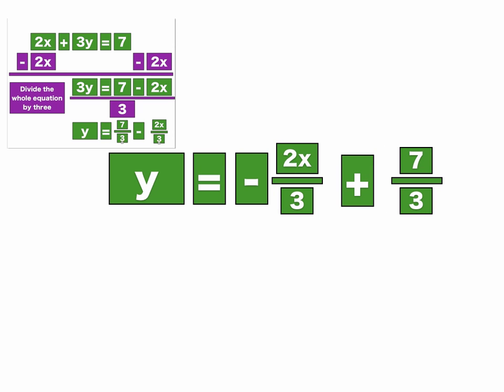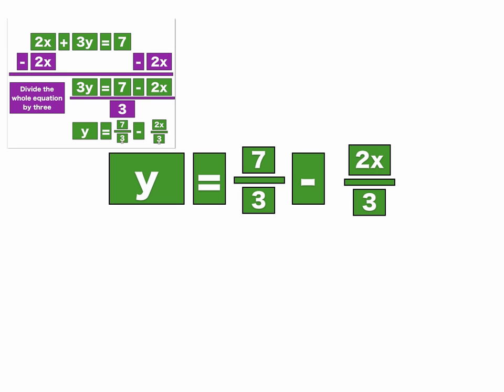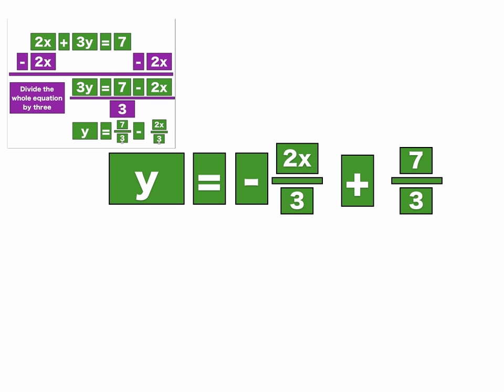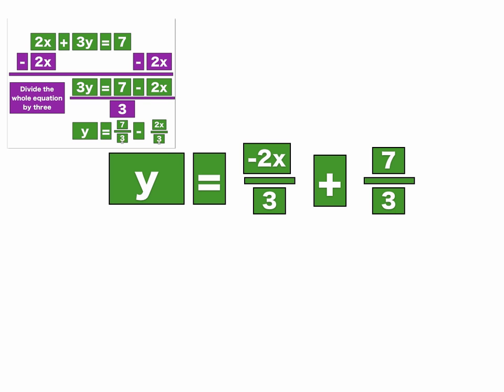Now notice I put a plus in front of the 7 thirds, because if I go back, see how 7 thirds is positive? That means that when I move it over to the right, I have to put a plus in front of it. And I leave the negative in front of the 2 thirds x. And it looks something like this when you're done. So you have y equals negative 2 thirds x plus 7 thirds.